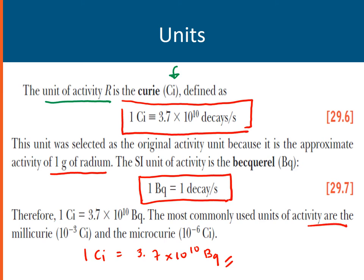The most common units used in activity are millicurie, or 10 to the power of negative 3, and microcurie, which is 10 to the power of negative 6. Millicurie may be symbolized as mCi, whereas microcurie would be microCi.